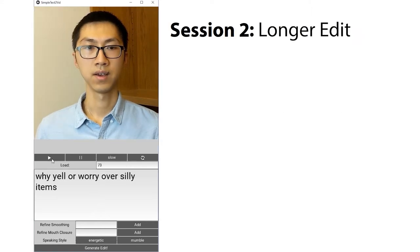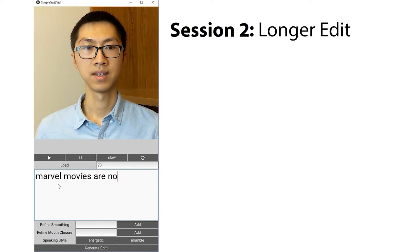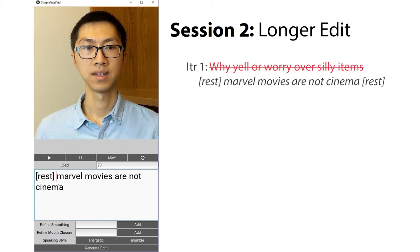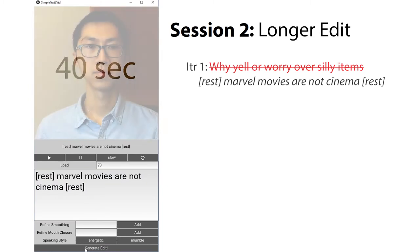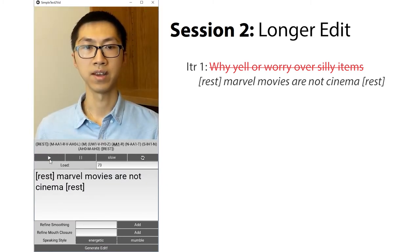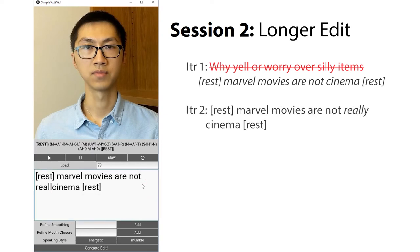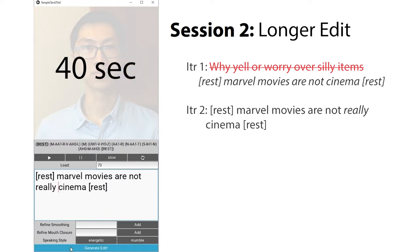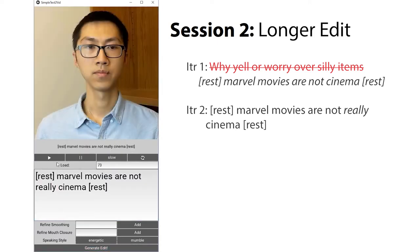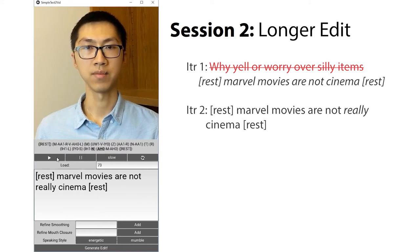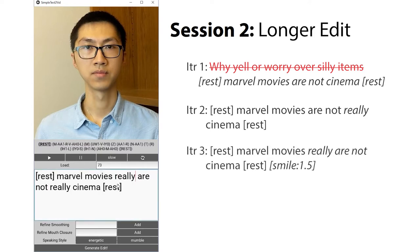In this example, we re-write this line into a Martin Scorsese quote. We add rest expressions to start and end the quote with the lips at rest. The result feels too blunt, so we change the wording: 'Marvel movies are not really cinema.' Now we change it to be more assertive, but then add a smile at the end to soften the tone.